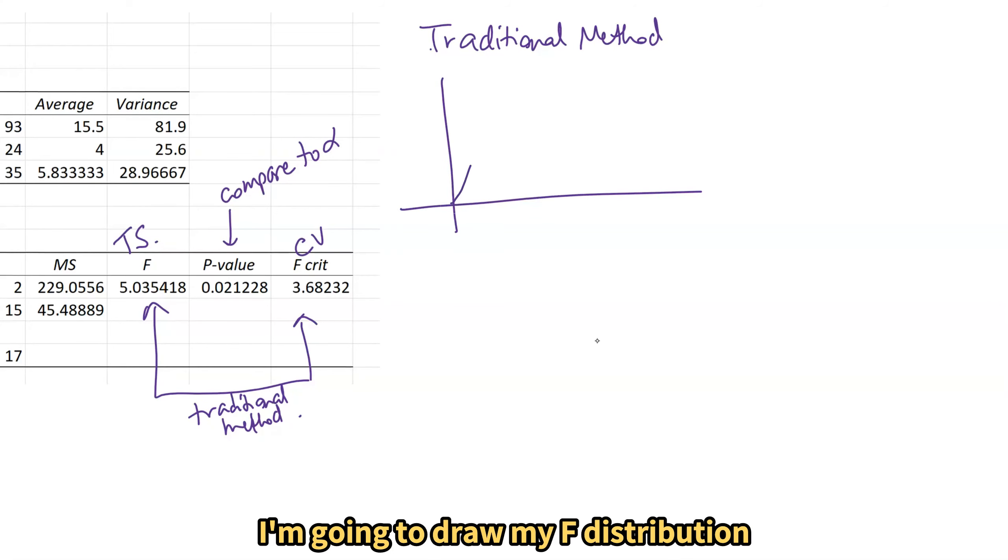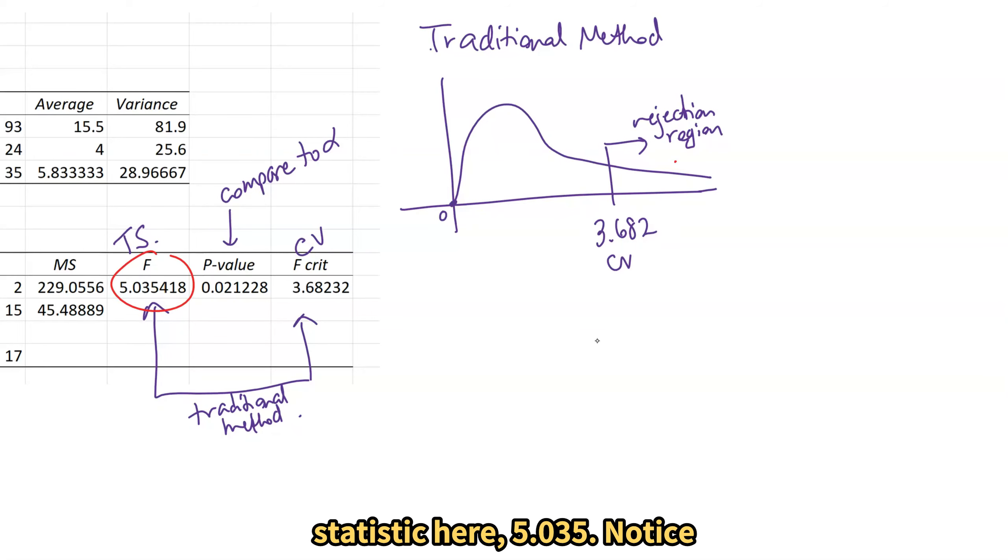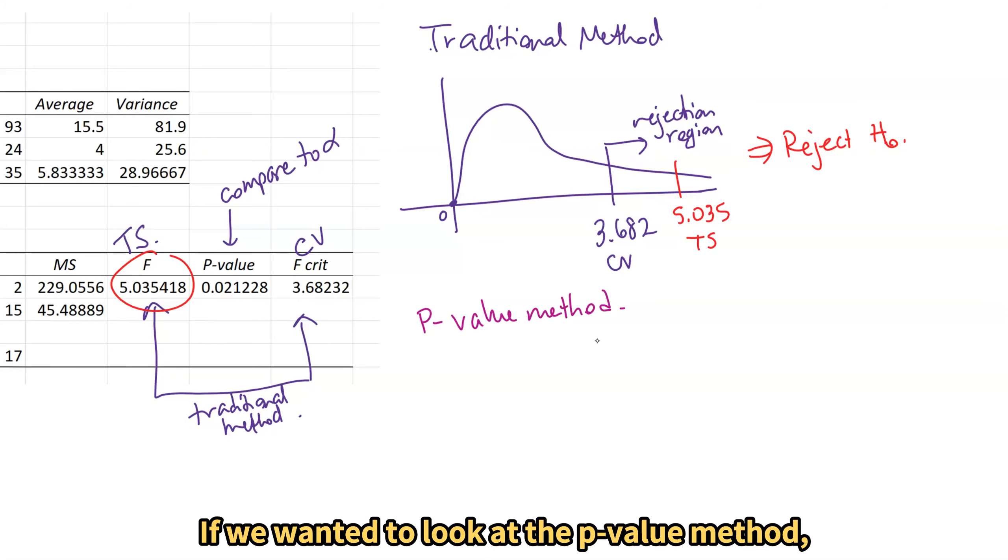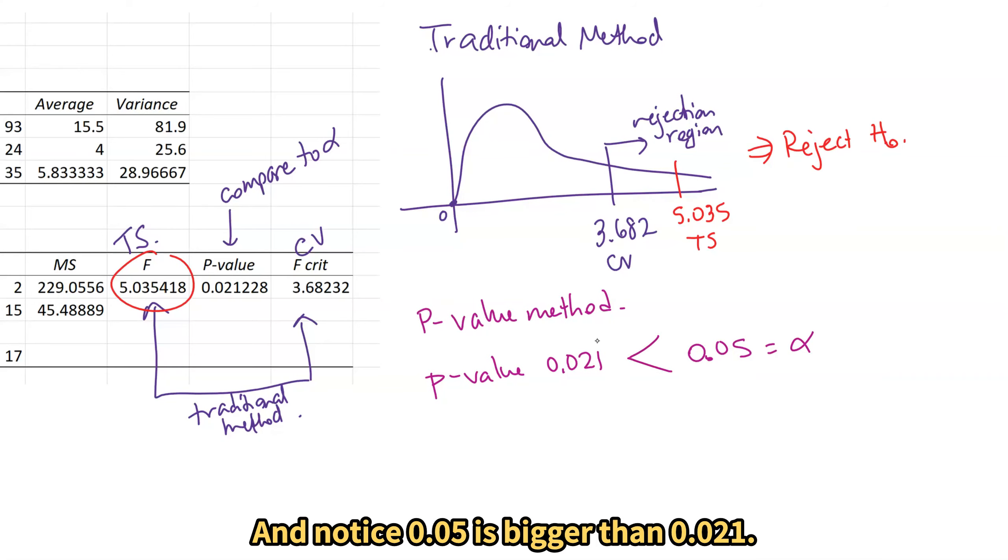So for traditional method I'm going to draw my F distribution. This value over here is at zero which is why I drew that vertical axis. We have our critical value 3.682 that creates a rejection region to the right and then if we take our test statistic here 5.035 notice it's in the rejection region so we would reject the null. If we wanted to look at the p value method we have a p value of 0.021 compared to an alpha of 0.05 and notice 0.05 is bigger than 0.021.